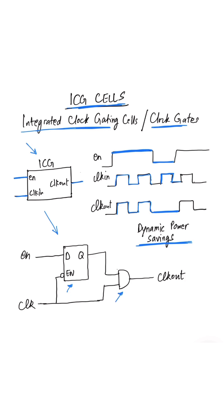In a more detailed video later, we will take a look at how this circuit functions as well as why we cannot simply use an AND gate to implement clock gating. We will also take a look at how timing analysis is done on the enable pin of an ICG.